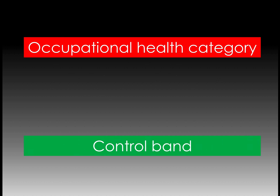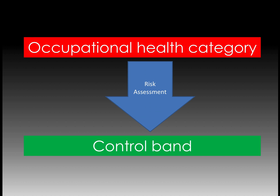So there are the two parts to our answer. Now, by example, let's show how they relate. In a perfect world, an occupational health category would directly match up to the same control band — so an OHC 1 compound would require control band 1 controls, and an OHC 5 compound would require control band 5 controls. But that direct approach doesn't take into consideration the quantity, the duration of the activity, the physical form, and other factors that influence exposure potential — in other words, it doesn't account for the exposure potential or the risk of the activity. This is where risk assessments come in; risk assessments are the link between the occupational health category and the control.